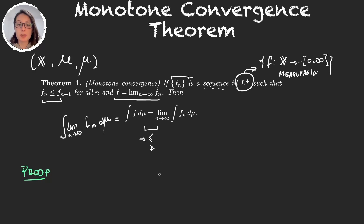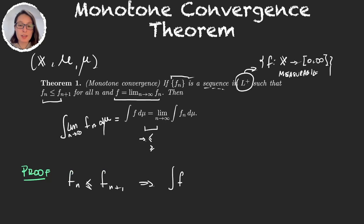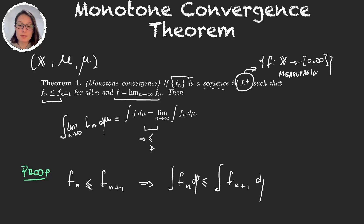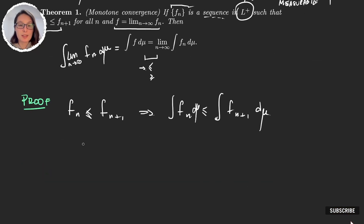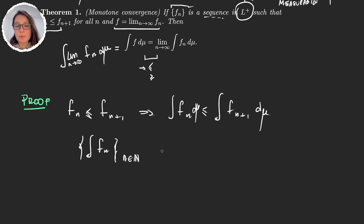Let's first prove that the integral of f is less than or equal to the limit of the integrals. First we note that if this limit exists: because the sequence fn is increasing, the integrals are also increasing — so we have an increasing sequence of numbers, and therefore this limit exists (possibly as infinity).